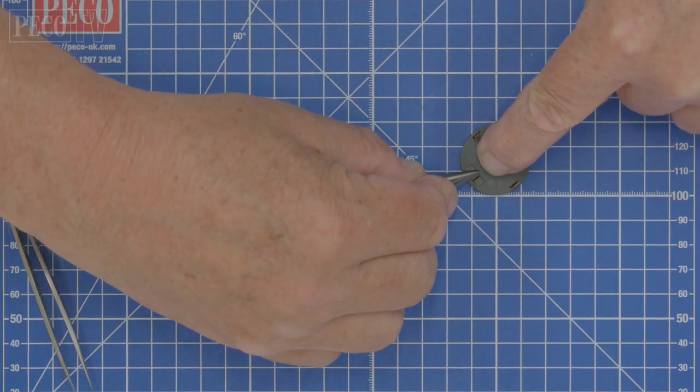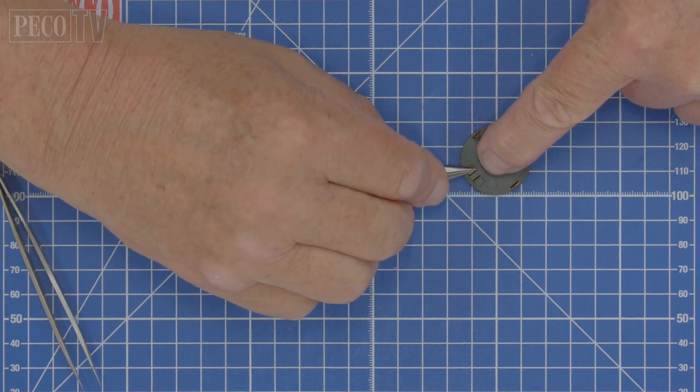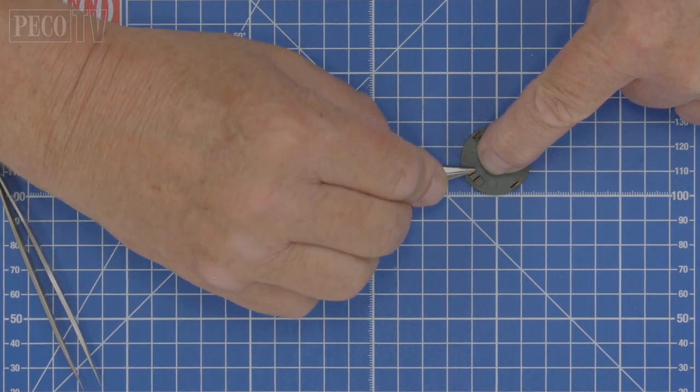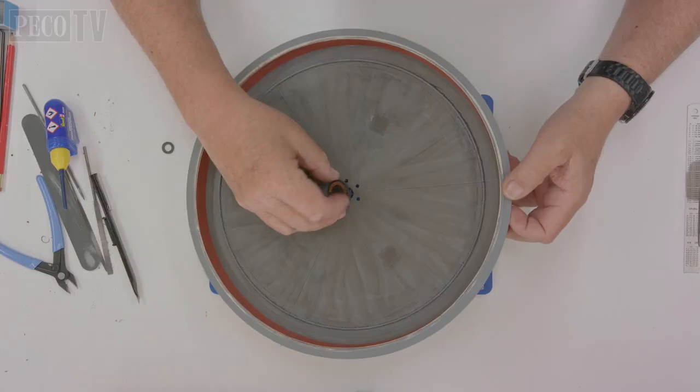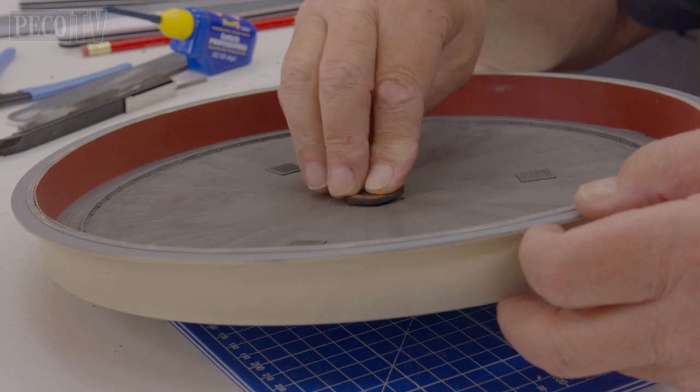Bend all three tags on each of the two contacts down at 90 degrees. A pair of pliers will help keep these bends sharp. Then cement the bearing assembly to the middle of the upper surface of the well.